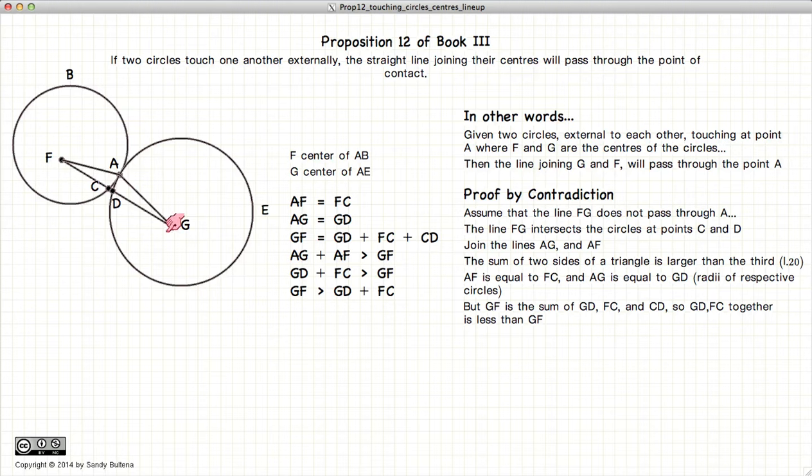However, we know that GF is actually equal to GD plus this little bit CD plus CF. So we have GF is less than GD plus FC, or GF is greater than GD plus CD.